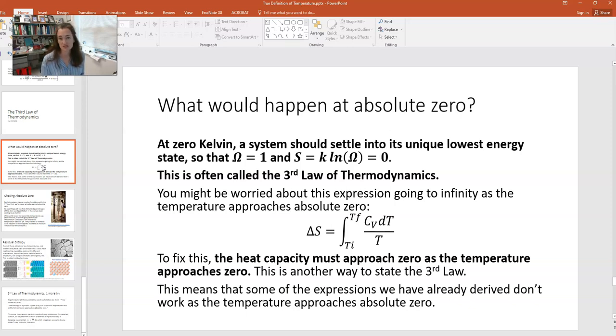So that would mean that the multiplicity of that would be equal to one. And then, via the definition of entropy, S is equal to K times the natural log of the multiplicity, that would give us an entropy of zero. And so that's actually the third law of thermodynamics.